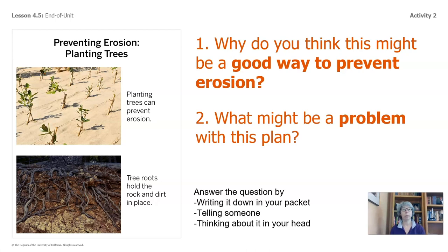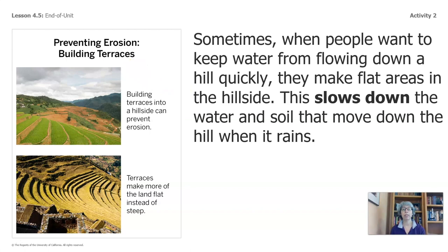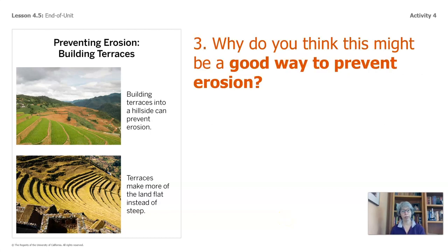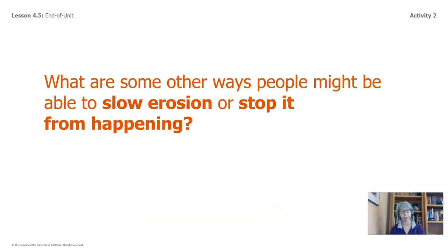Why might this be a problem? Here's another one — preventing erosion by building terraces. Sometimes when people want to keep water from flowing down a hill quickly, they make flat areas in the hillside. These are known as terraces. This slows down the water and soil that move down the hill when it rains. Building terraces into a hillside can prevent erosion — terraces make more of the land flat instead of steep. What might be a problem with this plan? What are some other ways people might be able to slow erosion or stop it from happening?